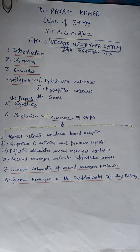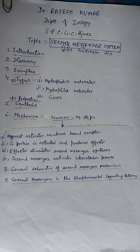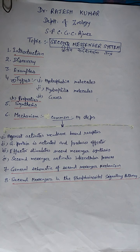Common mechanism of second messenger system: there are four steps. First, an agonist activates membrane-bound receptors. Second, a G-protein is activated and produces an effector. Third, the effector stimulates second messenger synthesis. Fourth, the second messenger activates intercellular processes.